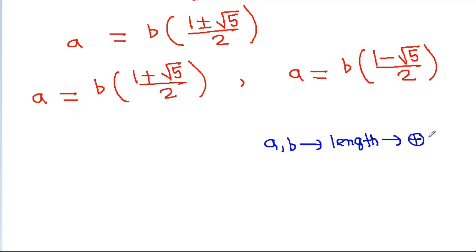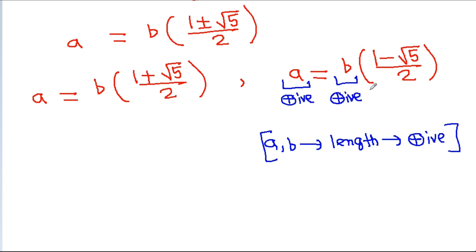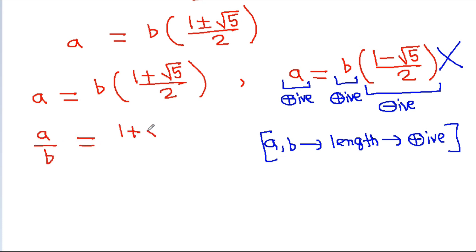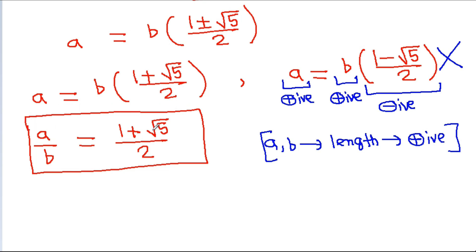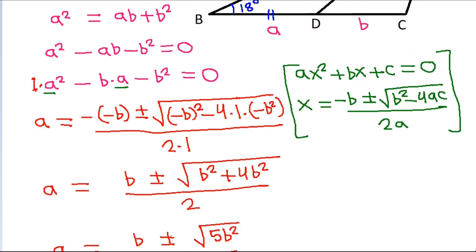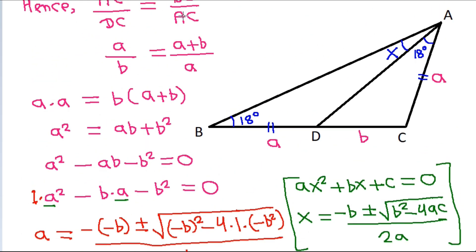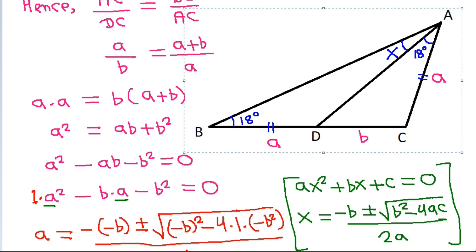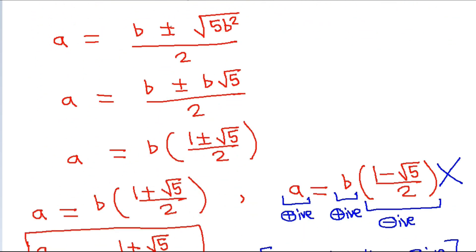Since a and b are lengths, they must be positive. The solution a = b(1 − √5)/2 is negative, so it is not possible. Therefore a = b(1 + √5)/2, which is positive.